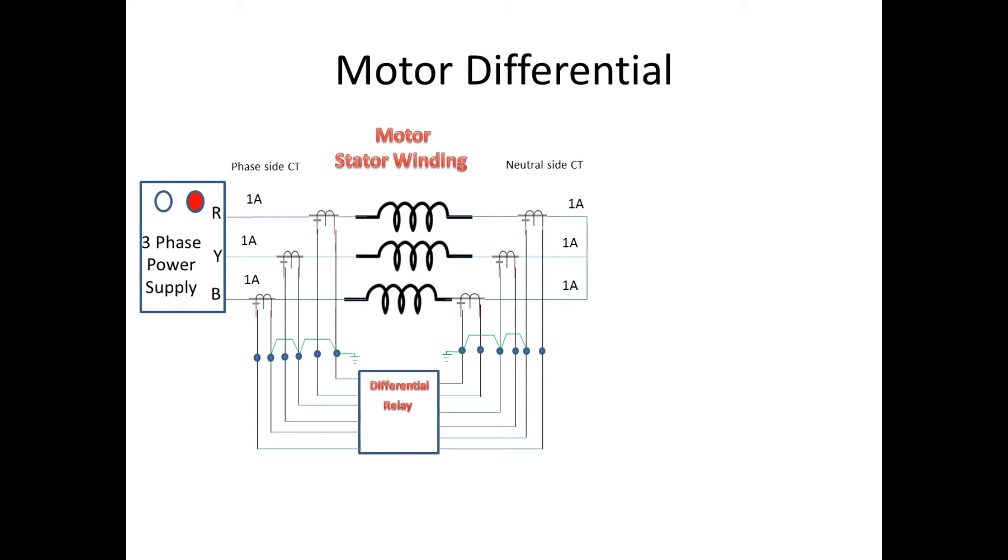Let us consider a fault on our phase, R to earth fault. Now the fault current takes path to the source from the fault area. So the neutral side current will not be the same as the phase side. Here, the phase side current is 10A taking due to fault.